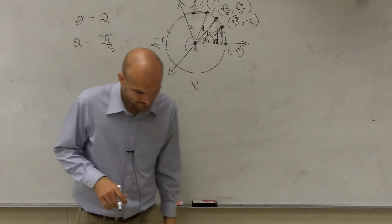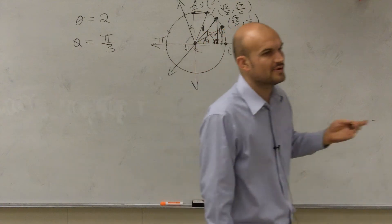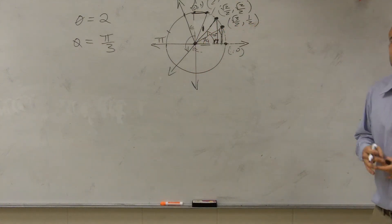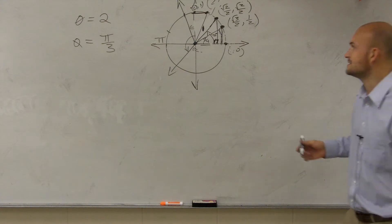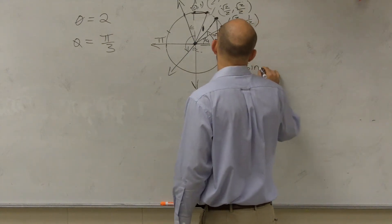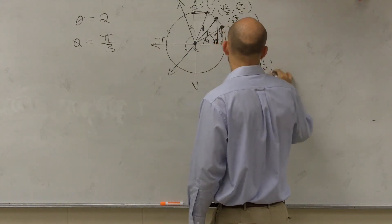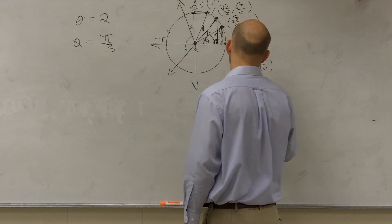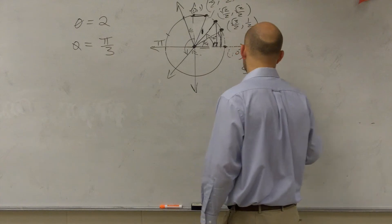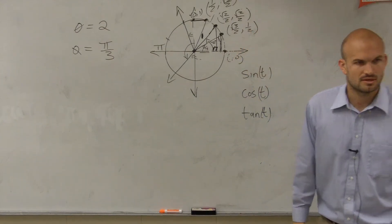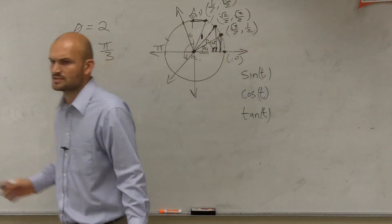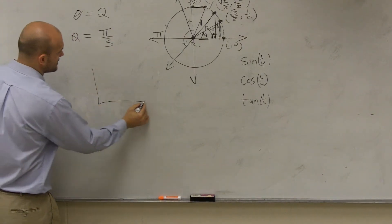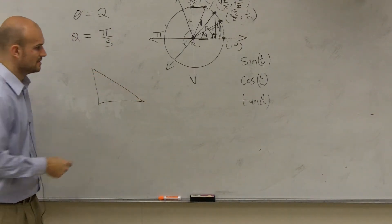So then what we started talking about was: if we can find the point on the unit circle, then how can I evaluate that for sine, cosine, and tangent? So we started talking about what was the sine of a point on the unit circle, the cosine of a point on the unit circle, or the tangent. We had to go back to our geometry days and remember what sine, cosine, and tangent are.